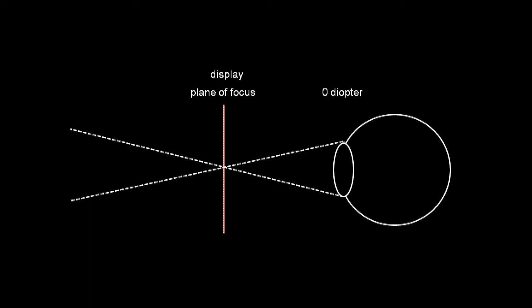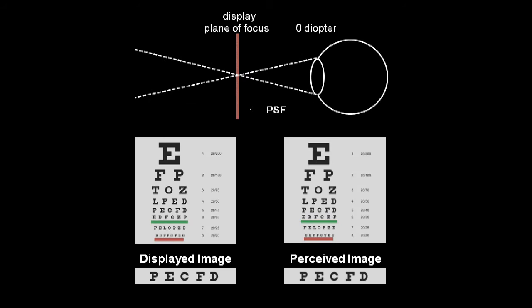Here we illustrate a viewer with presbyopia viewing a conventional display, for example an LCD panel. As the degree of presbyopia increases, measured in diopters, the perceived image becomes increasingly blurred.